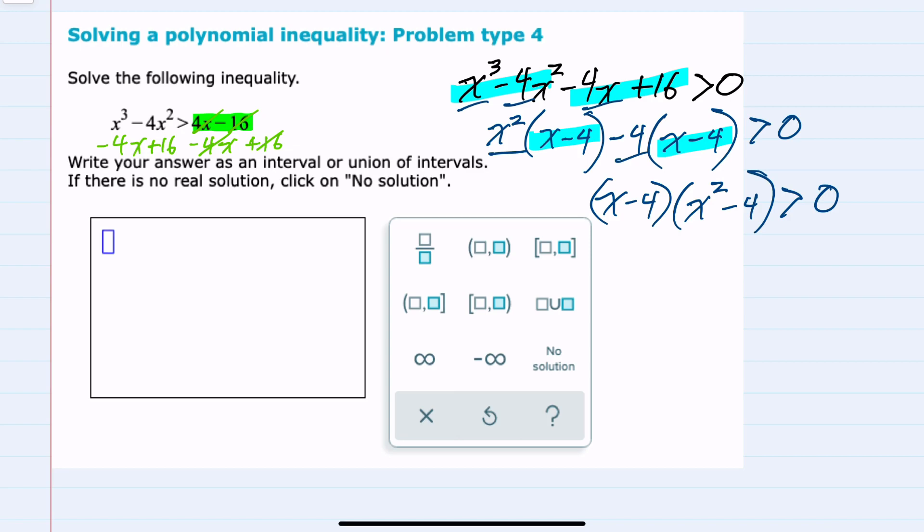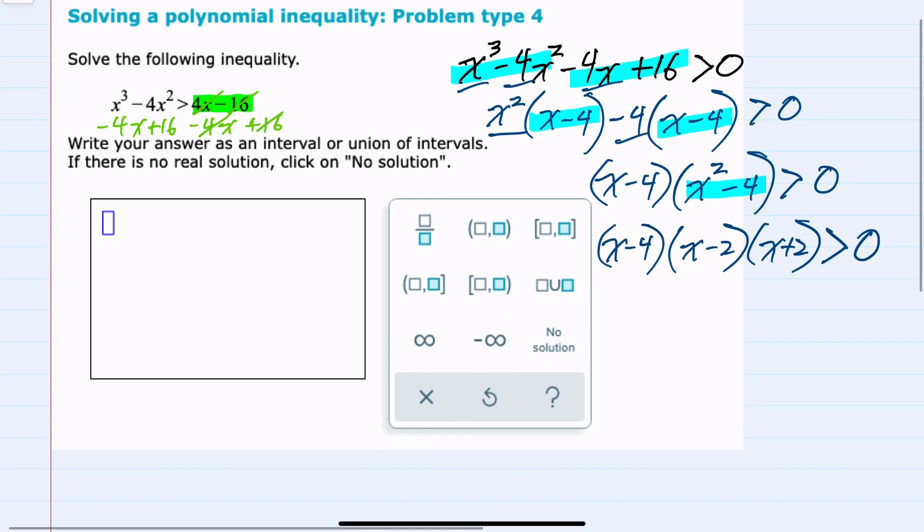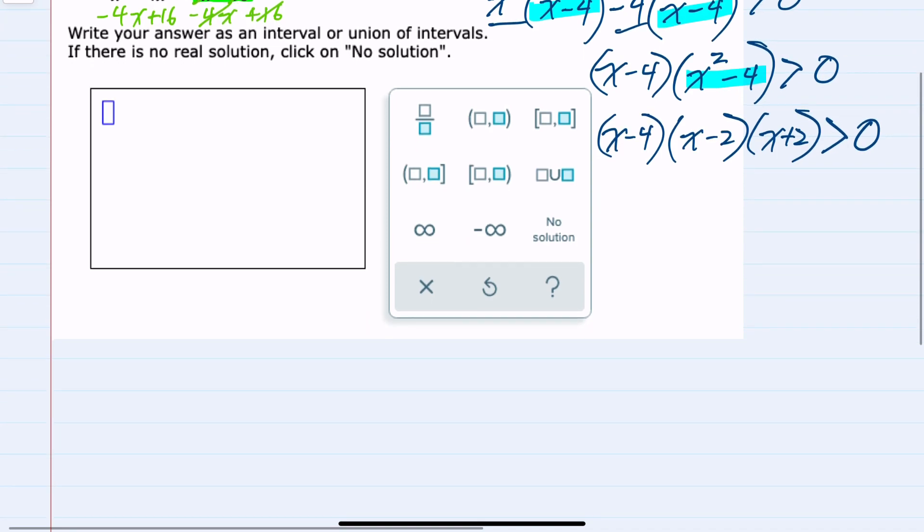But I can see that I could factor it further because the second term is the difference of two squares. So writing that as the difference of two squares would give me x minus 2, x plus 2 greater than or equal to 0. I can now see that I have three factors being multiplied is greater than 0.